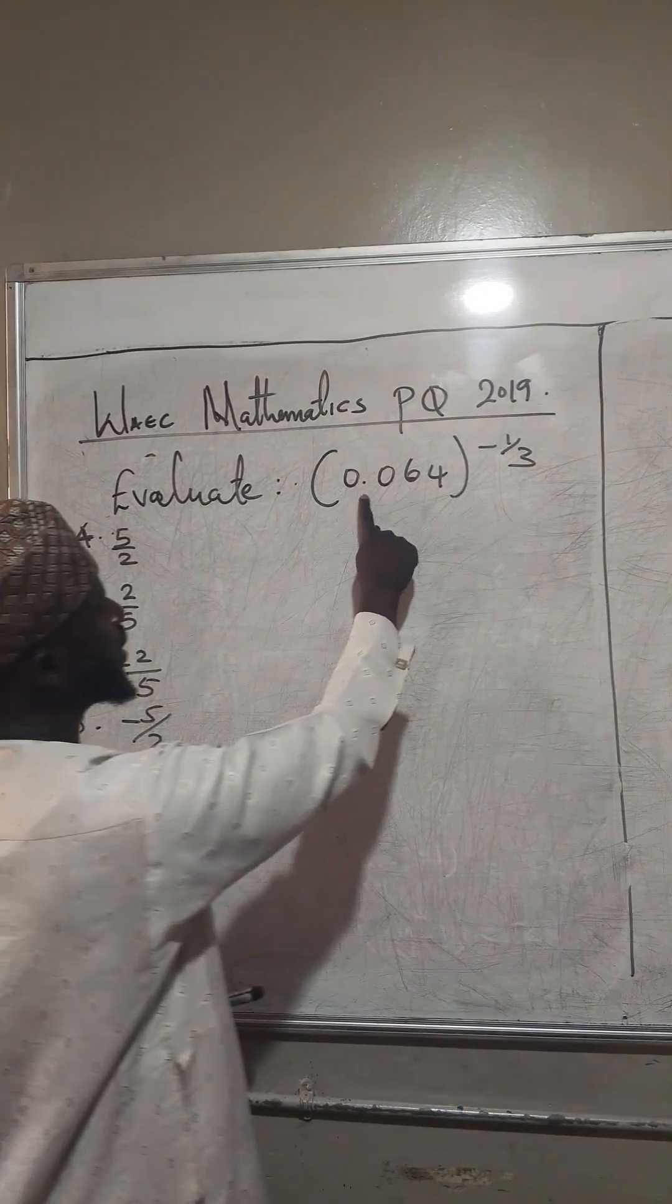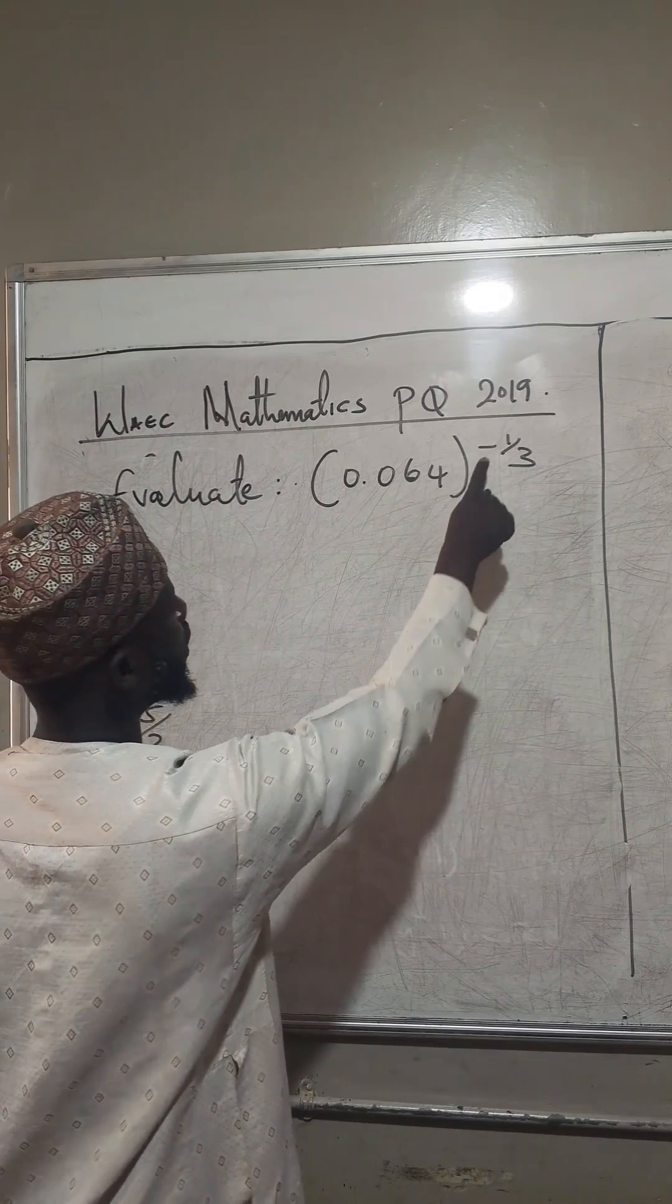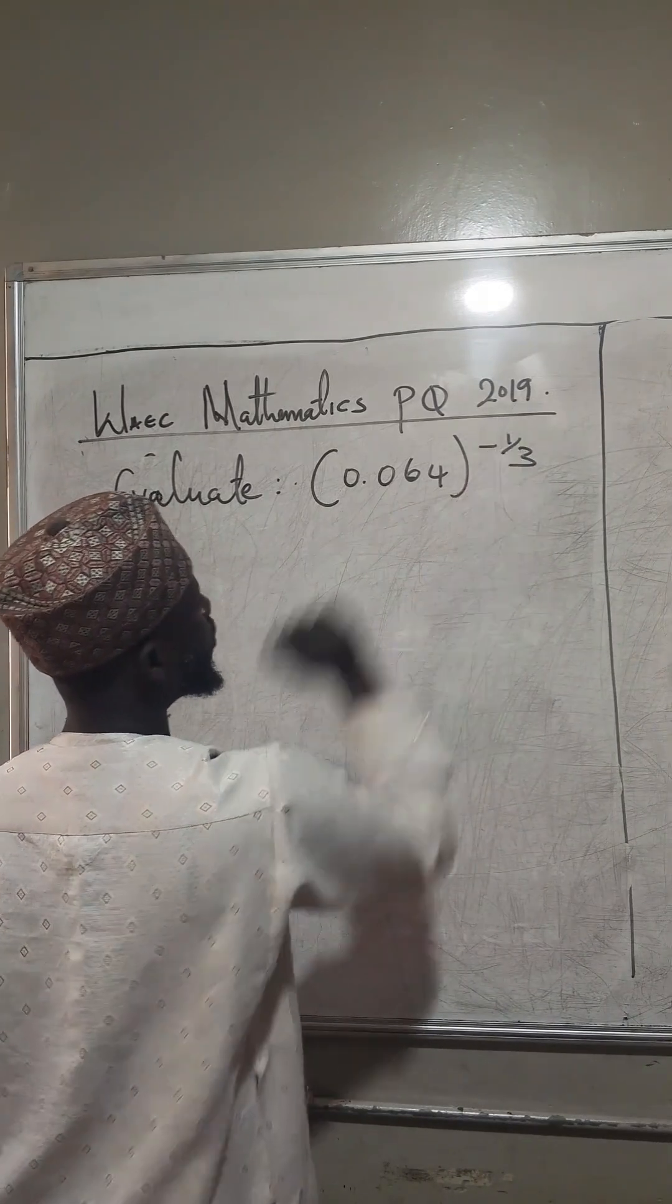And the question says, evaluate 0.064, raised to the power of minus 1 over 3.